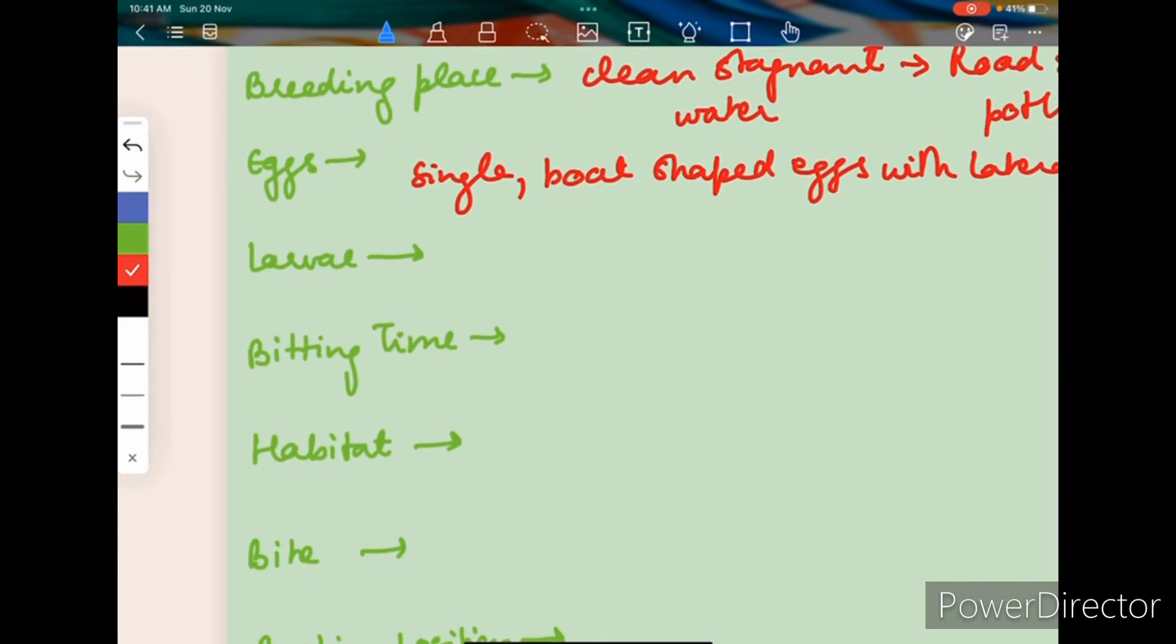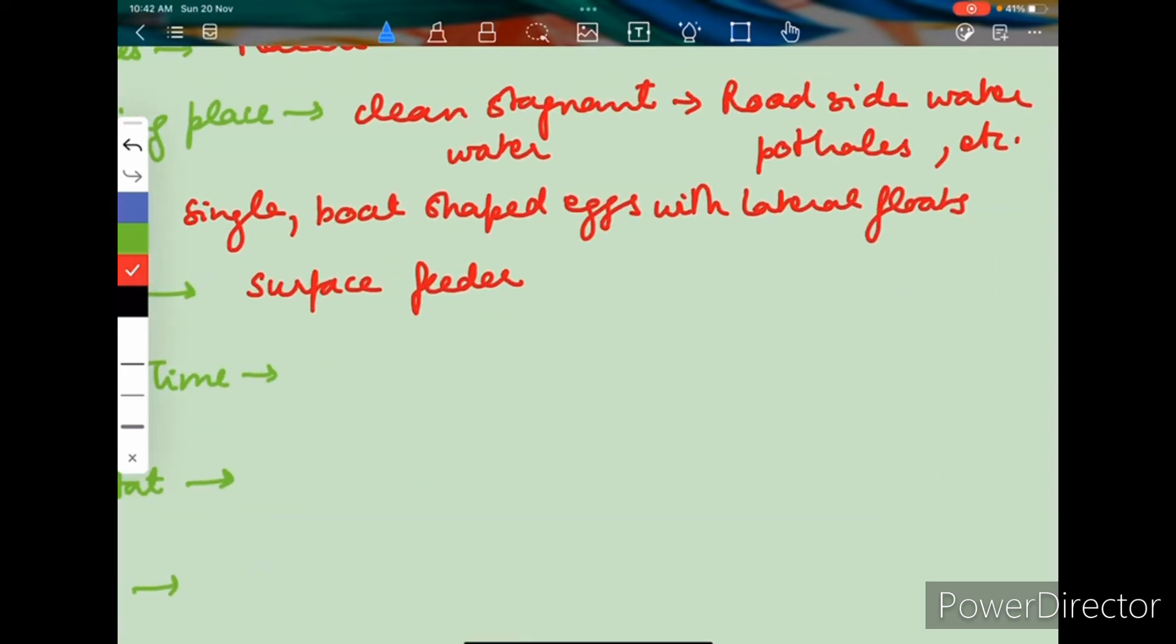And where are the larvae found? Larvae are basically the surface feeders because they don't have a siphon, so they are just near the surface of the water. So they have to come out of the water to get in the air.